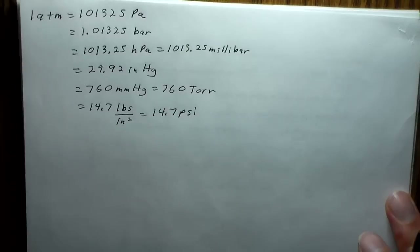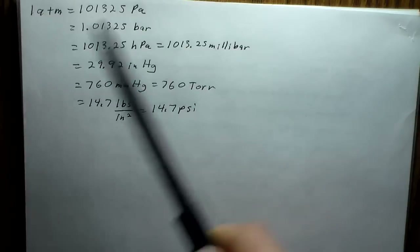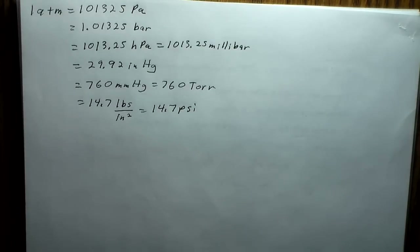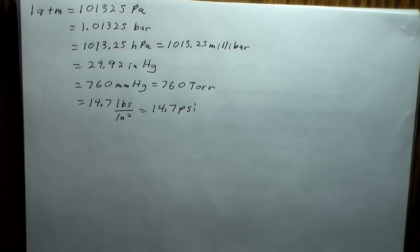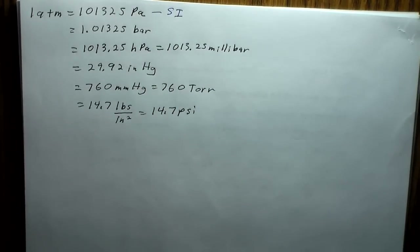Let's write down all the pressure unit conversions in one place — all equivalent to one atmosphere. We have Pascals, which is the SI unit as derived earlier: 1 atm = 101,325 Pa. In Europe, kilopascals are often used, so you'd see about 101 kilopascals on a European weather report.